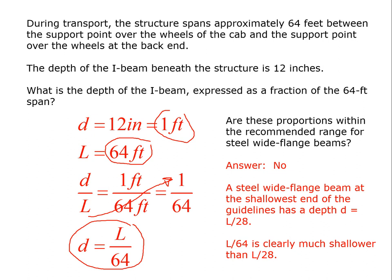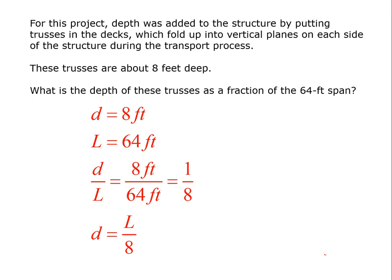So the question is, are these proportions within the recommended range for steel wide flange beams? And the emphatic answer is no, because the steel wide flange beams at the shallow end of the guidelines has a depth of L over 28. And L over 64 is really small. And by the way, stiffness effects go in proportion to the depth to the fourth. So if you're cutting the depth in half or more, you're having a catastrophic effect in terms of reducing stiffness. So this is clearly way too shallow for anything. It would bounce horribly in place, but also during transport.